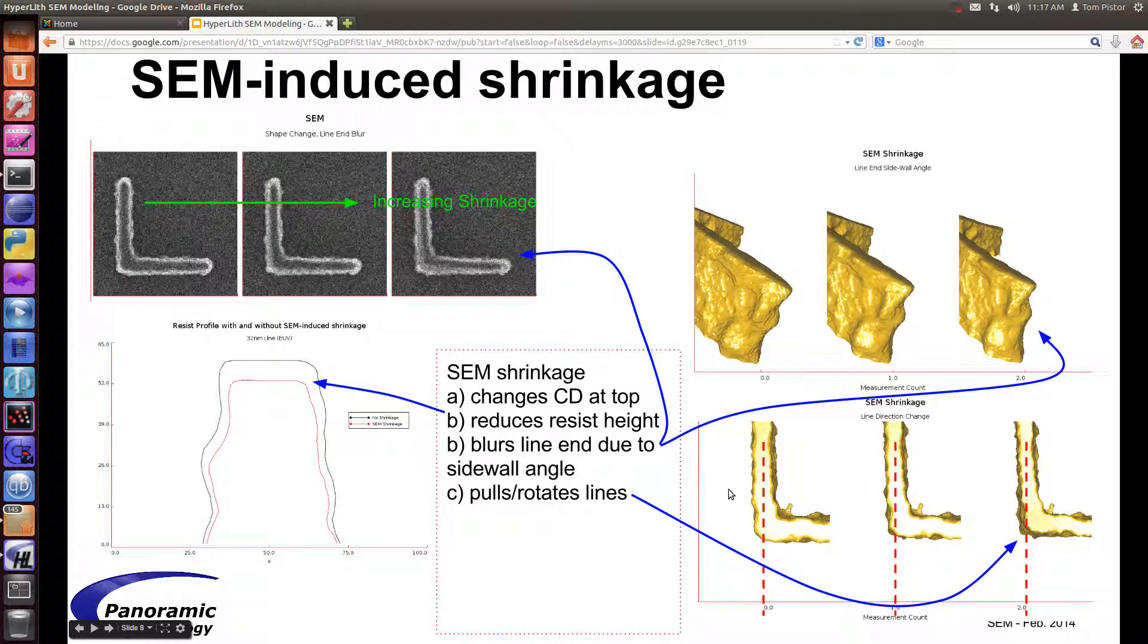SEM also induces shrinkage. In this case, these are simulated SEM images as the shrinkage is increased. Here we have no shrinkage, and here I think we have 10% and 20% shrinkage—it might be 5% and 10%, I'm not sure. But as you can see, this line angle is changing.